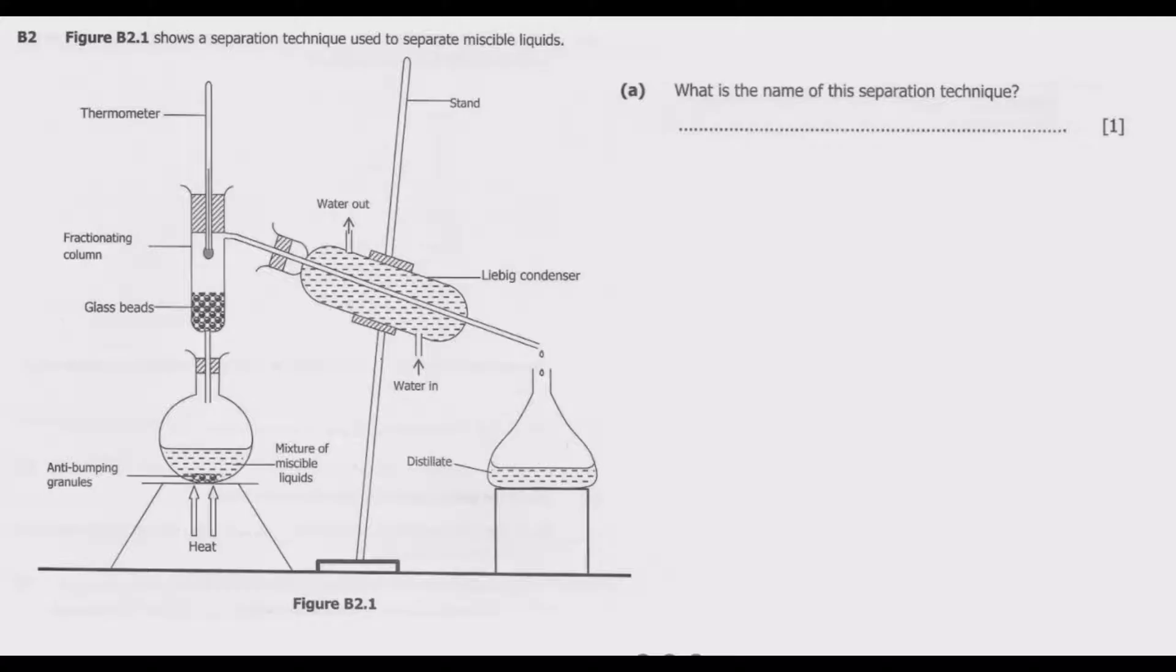So if you look at the diagram, basically we have the thermometer, fractionating column, glass beads, antibumping granules, then we have the mixture of miscible liquids, then we have water in, a distillate, a Liebig condenser, then water out, then stand.